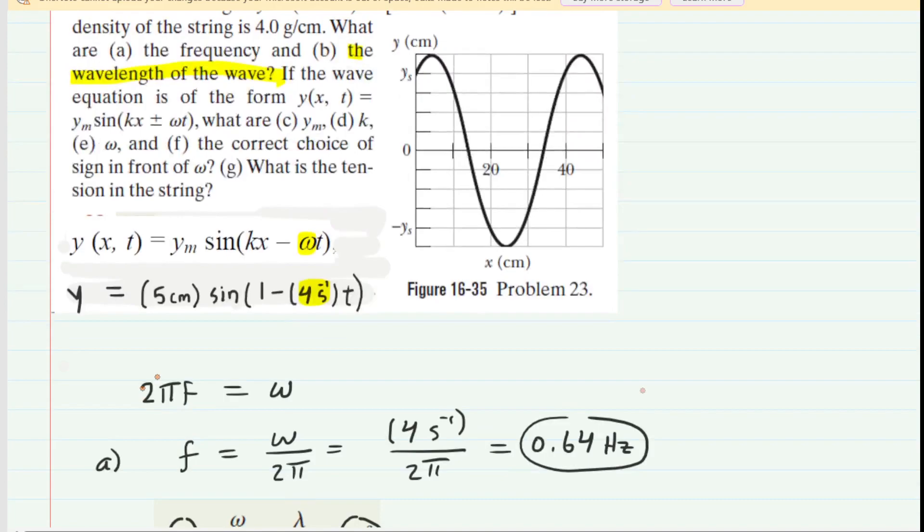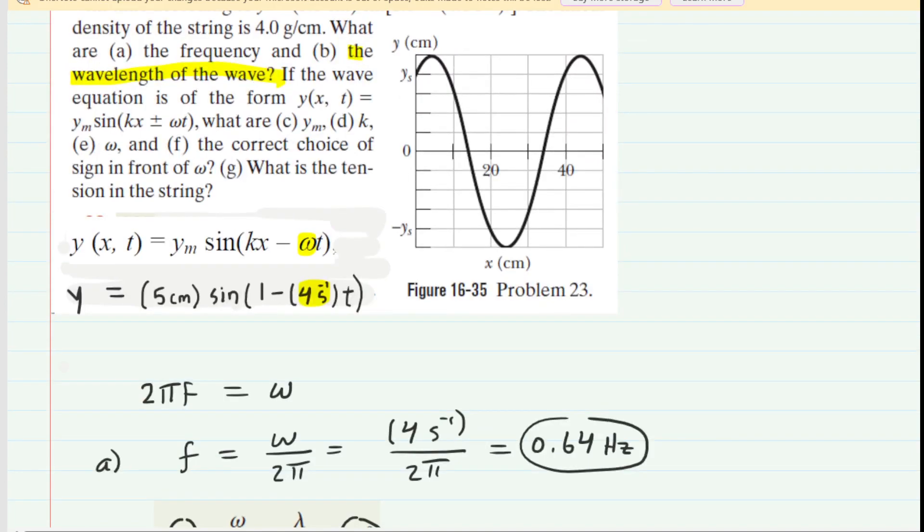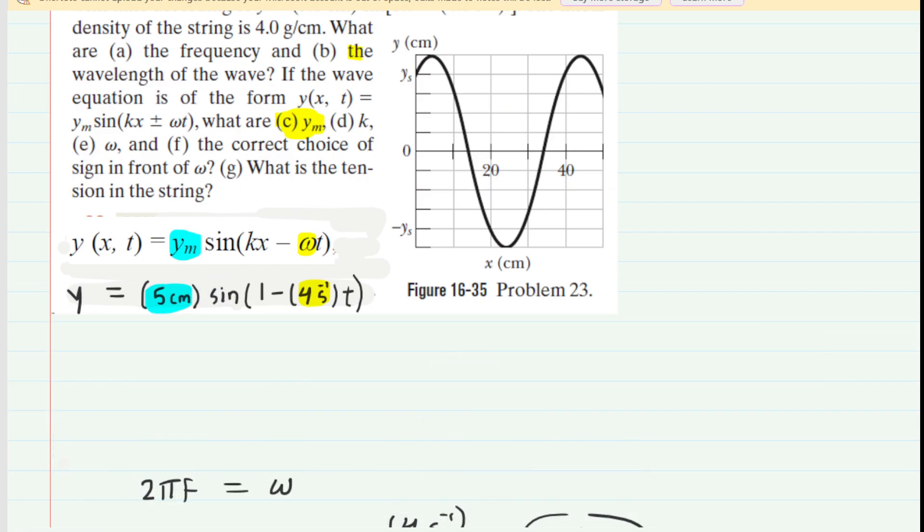Let's go back up and see what part c is asking us to do. It says if the wave equation is of this given form, what are y sub m? We can look back at the equations that we had aligned earlier, and we can see that y sub m, which is the coefficient of sine, in this case is equal to 5 centimeters, which is also the coefficient of sine. There's really no need to calculate anything in part c. We can simply say by inspection that the y sub m, which is the amplitude of the wave, is going to equal 5 centimeters. That's the correct answer to part c.